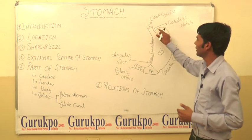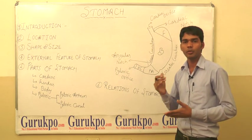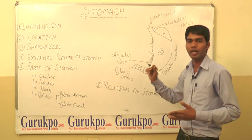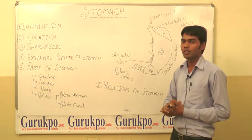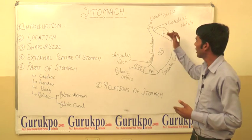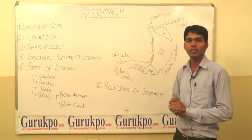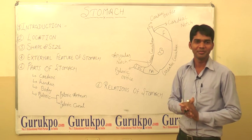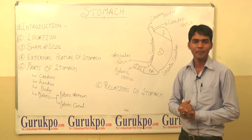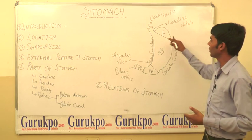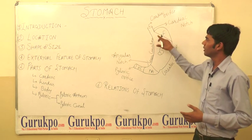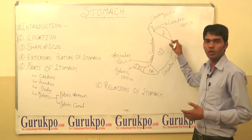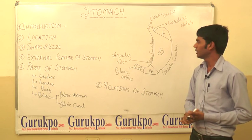The fundus part is a small, superior, dome-shaped and convex part. The fundus part lies above a horizontal line that is drawn from the cardiac orifice.